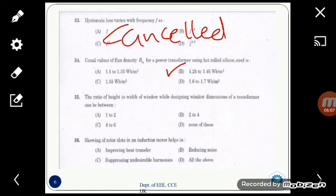The next one is: skewing of rotor slots in an induction motor helps in? This is also cancelled by PSC in its final answer key. We know that skewing is used to avoid the cogging effect, that is the magnetic locking effect.